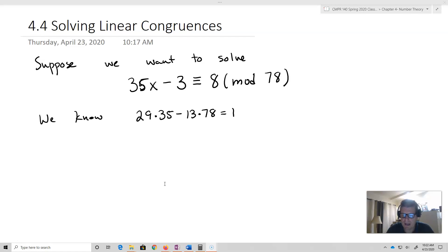All right, so that's our linear combination. The linear combination tells me that 29 is the inverse of 35 in modulo 78. So that's actually going to be really important because at the end, after we've added 3 to both sides, I need to multiply 35 by something, by its inverse, in order to make it equal to 1.